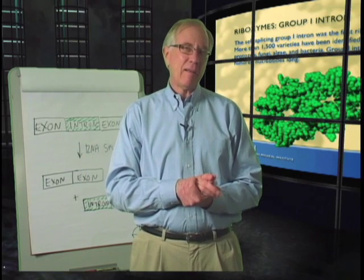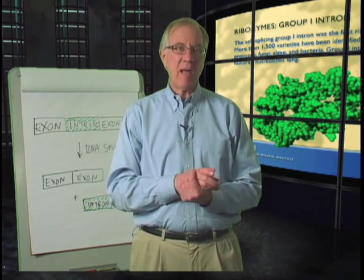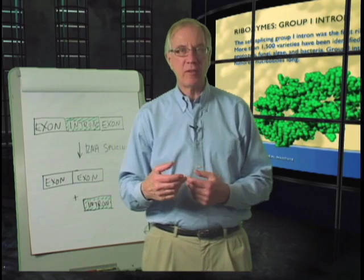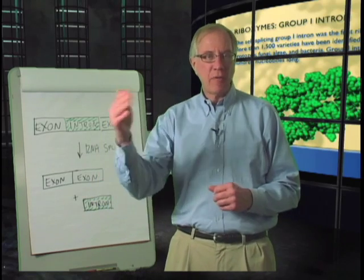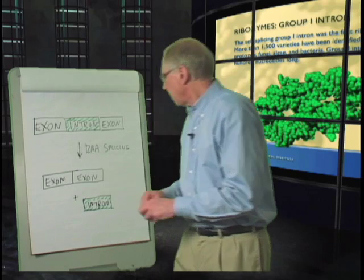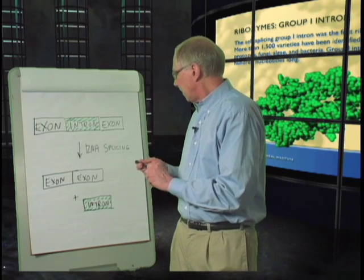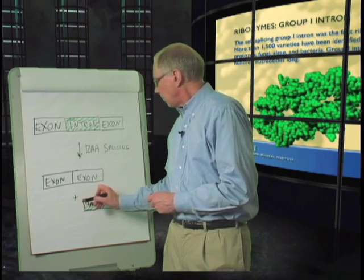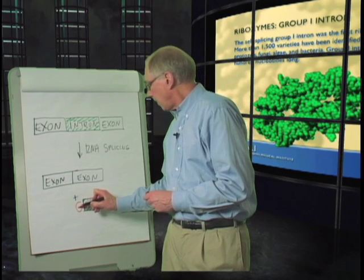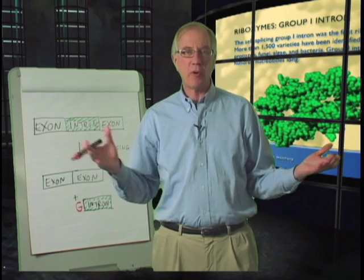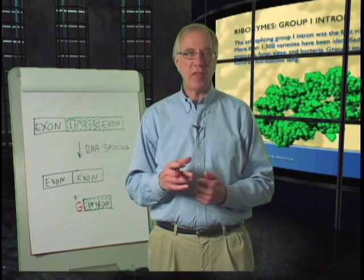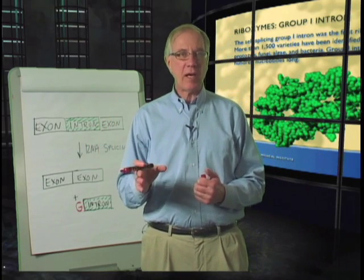But didn't really know what to make of it until someone else in the laboratory, Art Zaug, was sequencing the end of the intron after it was excised from the larger RNA. And he found that the sequence of the cut-out RNA started with a guanosine residue, which is one of the four nucleotides of RNA.